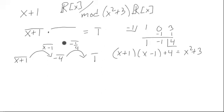So then the inverse would simply be this times that, which would end up being negative a fourth x plus a fourth. And that is our inverse of x plus 1 in mod x squared plus 3 arithmetic.